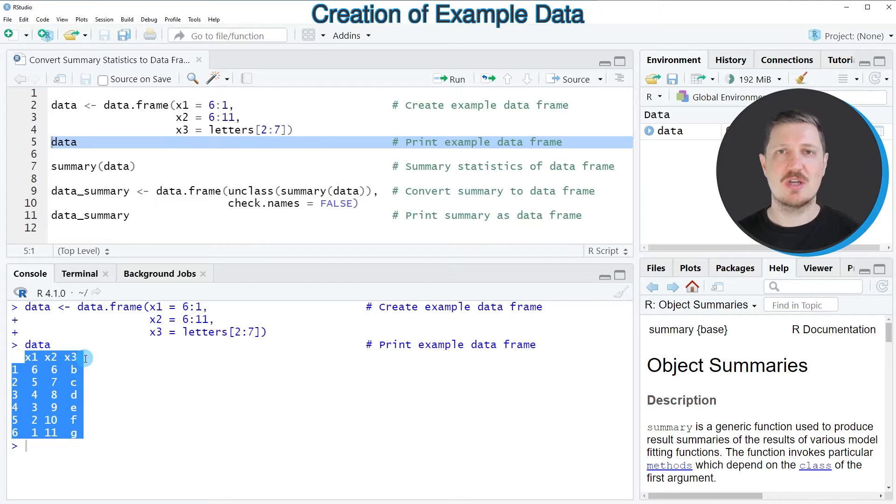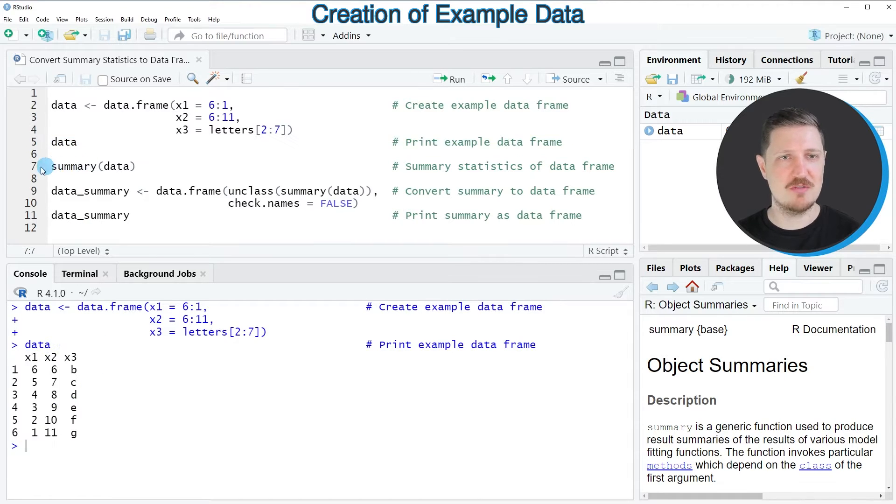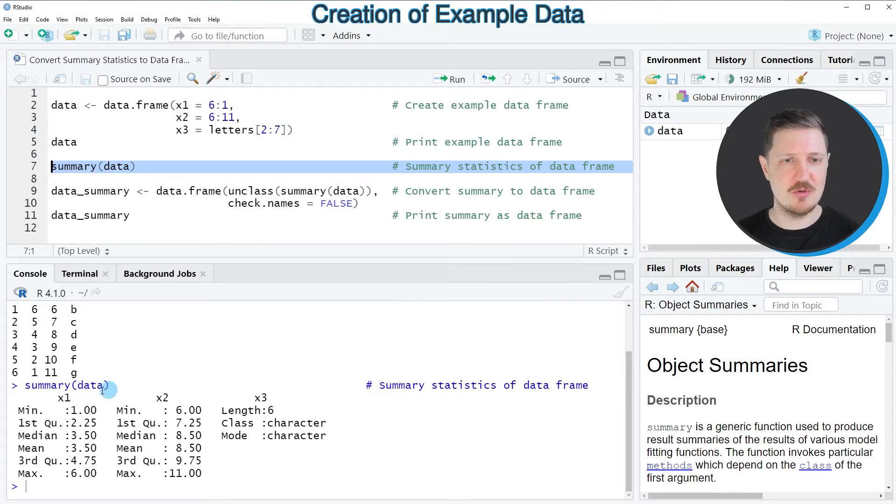Now if we want to calculate certain summary statistics for our data frame, we can apply the summary function to our data frame as you can see in line 7 of the code. After running this line of code, a new output is created which contains different summary statistics for all the columns in our data frame.